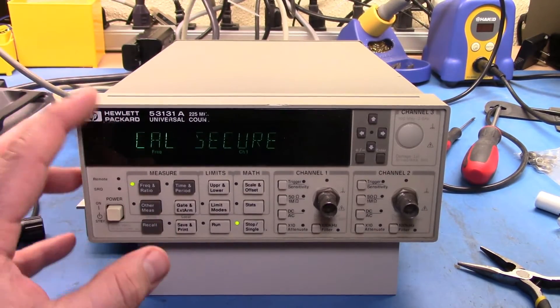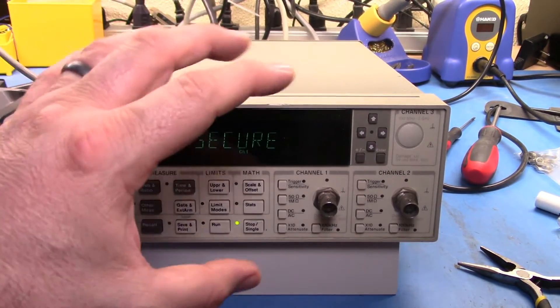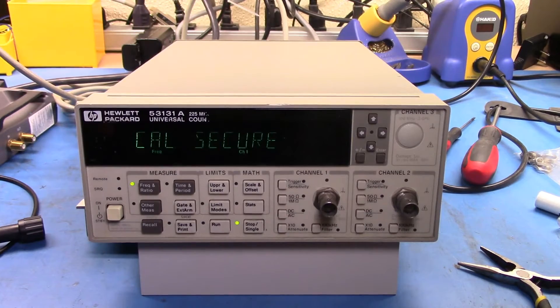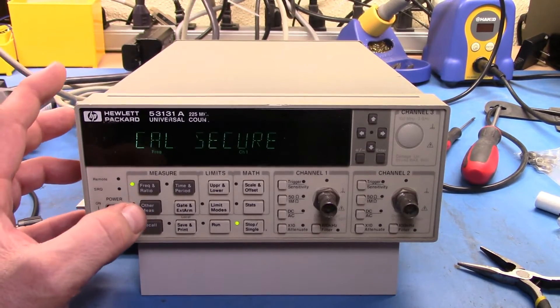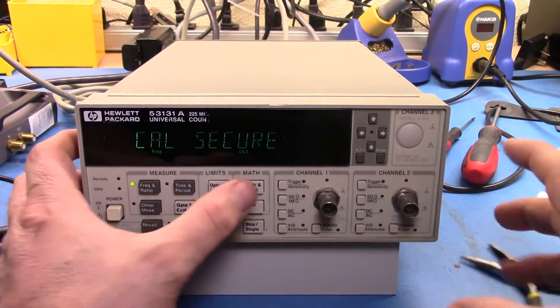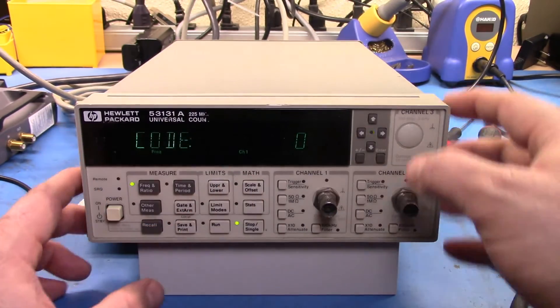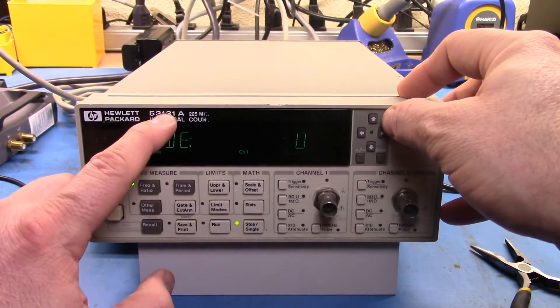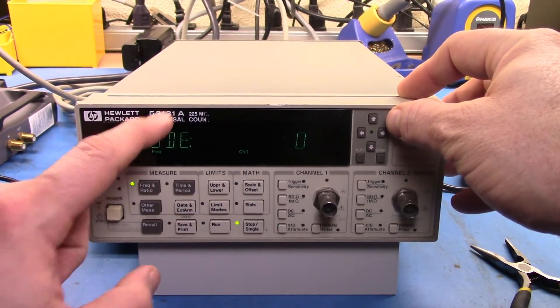Now the CalSecure basically means there's a code been put in that would stop you from running the calibration stuff. Now most of the time when you see this though, the CalSecure is still the default setting from the factory. So we can hit scale offset to get to the code and the default setting is in fact just the model number.